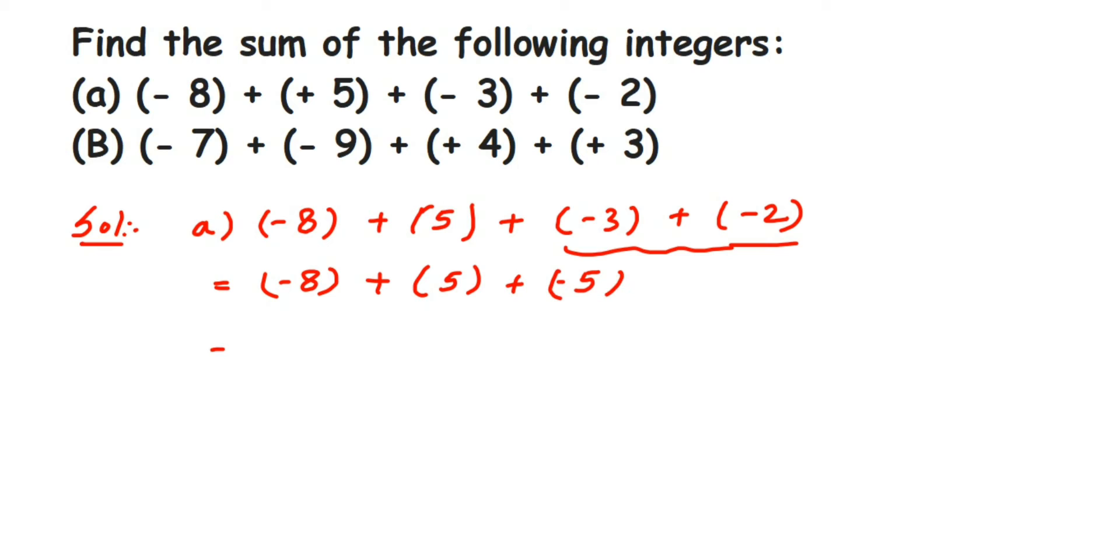Now again I'm going to solve the last two integers, which is 5 + (-5). Here you're adding numbers with different signs, so we subtract them. 5 - 5 is 0, so these two cancel out. We'll get (-8) + 0, or you can directly write down (-8). So this is equal to (-8).